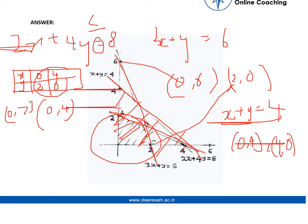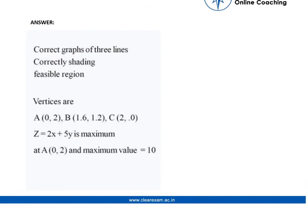Now to find out the maximum value we put the values of A, B and C in the constraint equation. That is z equals to 2x plus 5y and we find that at A, that is 0, 2, z equals 2 into 0 plus 5 into 2 which is 10.